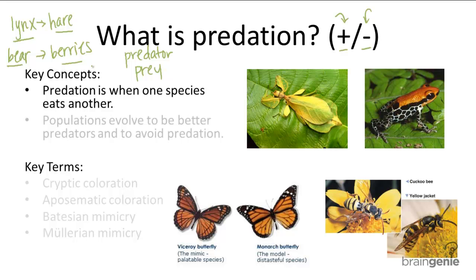Over time, many animal and plant species have evolved different defenses to protect themselves against their predators. There are active defenses that animals have learned, such as hiding, running, or defending themselves. But these all cost energy, so there are other passive defenses that involve morphological and physiological adaptations. There are four main passive defenses.